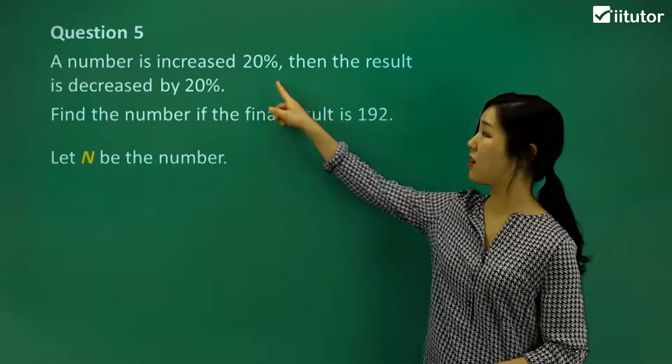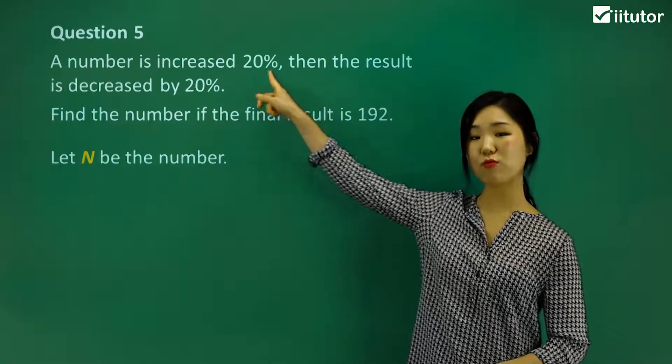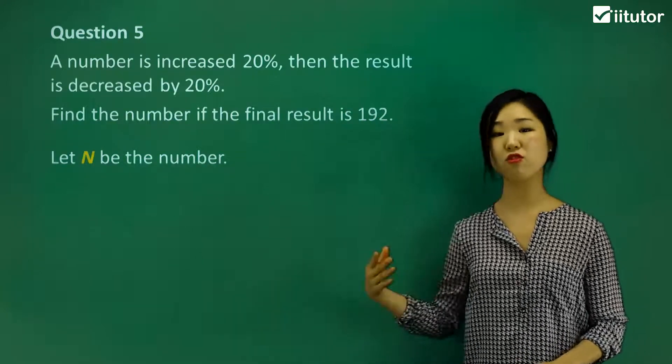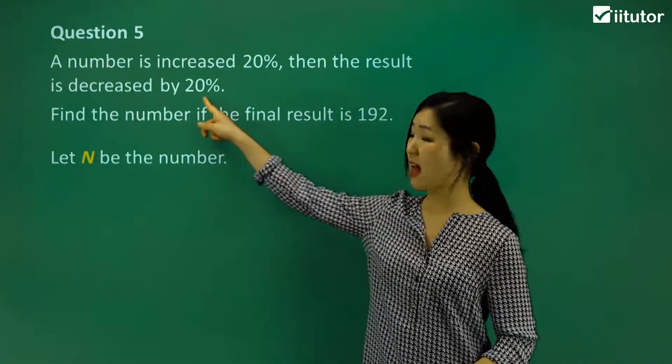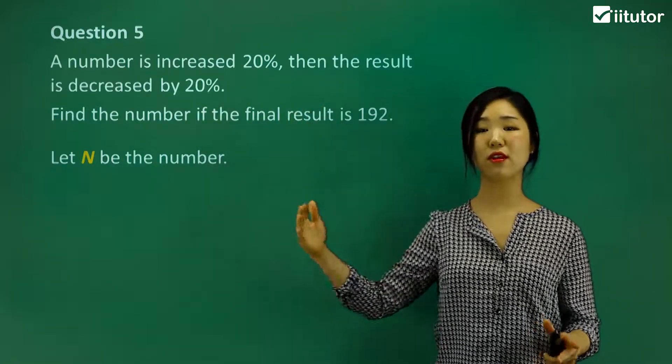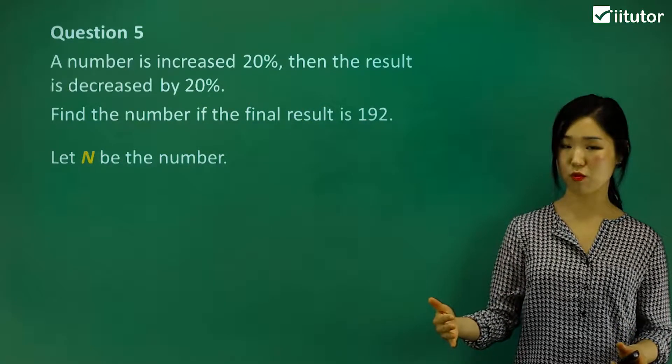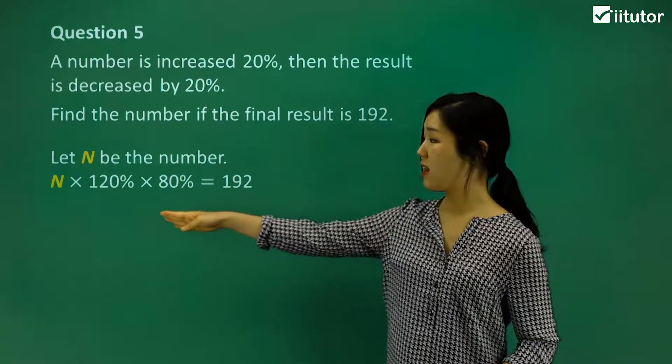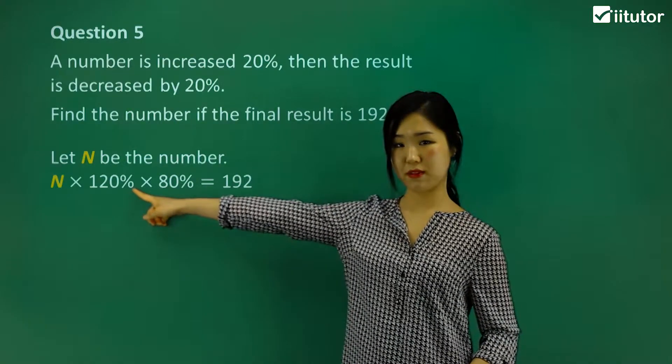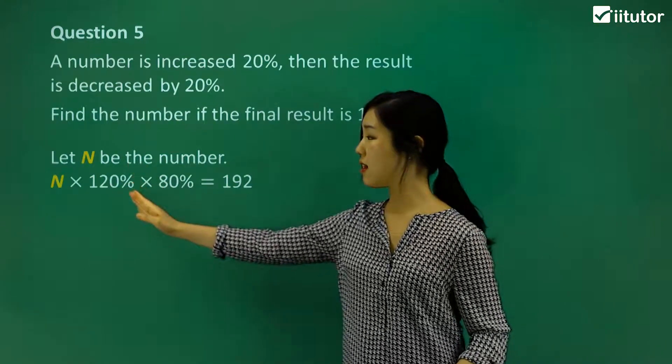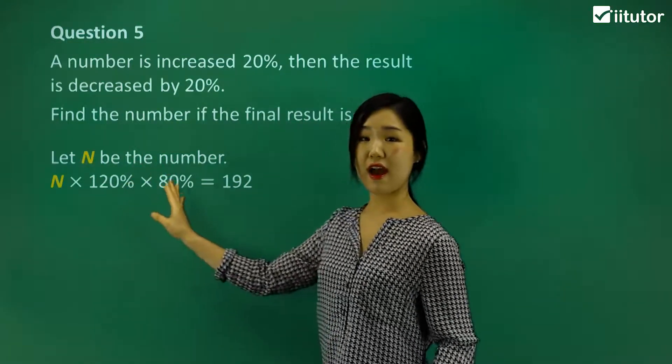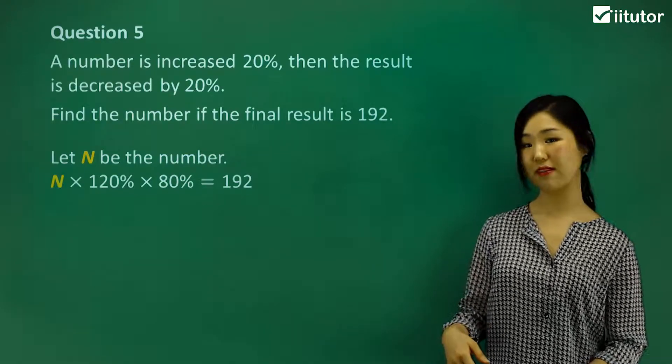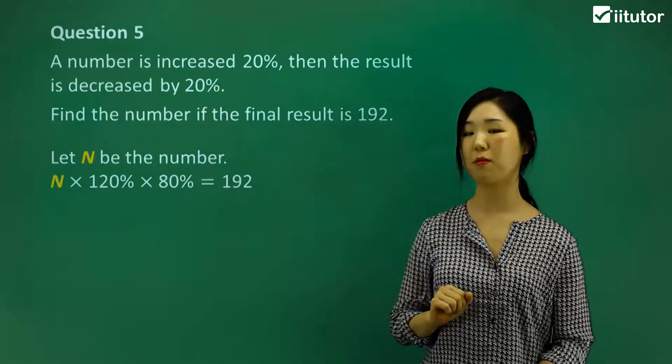Now see how it's going to be increased by 20%? Which means it's going to be 100 plus the 20%, which is 120%. And then if we decrease that value by 20%, we're basically doing 100 minus 20%, which is 80%. So that's what I'm doing all at once. The N, I'm going to multiply by 120% because I'm increasing it. And to that value, I multiply by 80% because now I'm decreasing it. Make sense? And that outcome becomes 192.